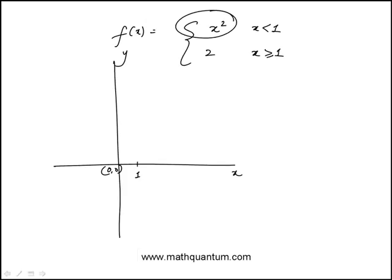So this is going to be x less than 1 for all these values. It's going to be like that, up to this point.